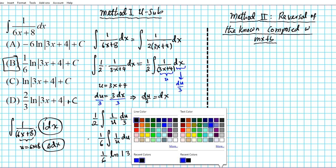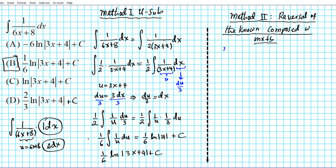Let's write down the formula first. If you're looking for the integral of a known derivative — call it F prime — composed with MX plus B, then the anti-derivative is the anti-derivative function F composed with MX plus B, divided by M, plus C. This formula appears repeatedly on the AP exam, so if you know how to exploit it, you can really cut down your time.